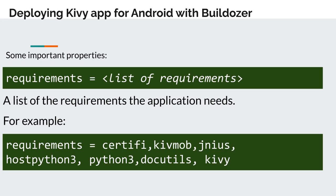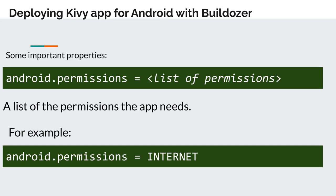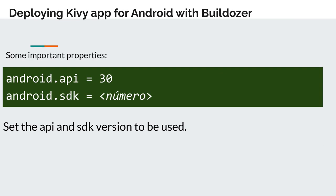Another important property is the requirements — it's a list of the requirements the application needs to run. Shown here is an example of requirements. Another important property is Android.permissions, which is a list of the permissions the application needs to run. In the example there is an indication that the app needs to access the Internet. We also have Android.API and Android.SDK options. These options set the API and SDK versions that will be used by the application. API version 30 is mandatory in the case of AAB generation.